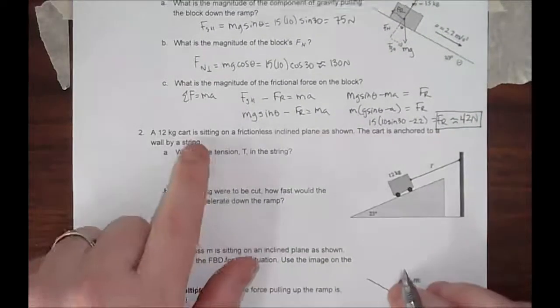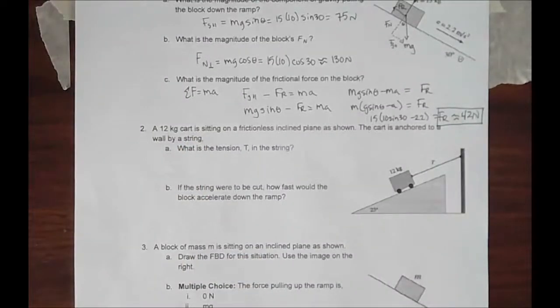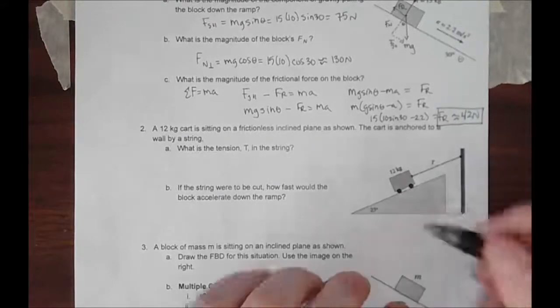Problem two. A 12-kilogram cart sitting on a frictionless inclined plane is shown. The cart is anchored to a wall by a string. What is the tension in this string? If this is a frictionless plane, which it is, and we have mg.